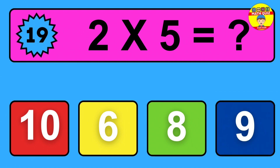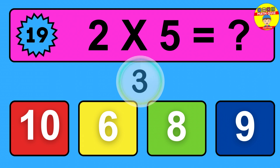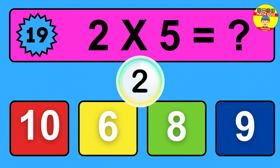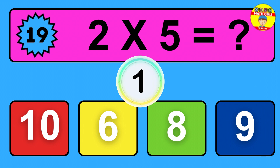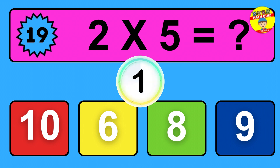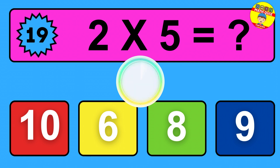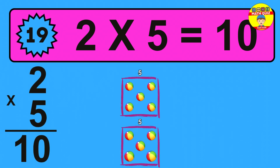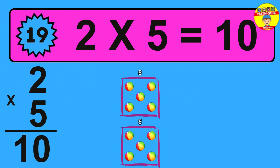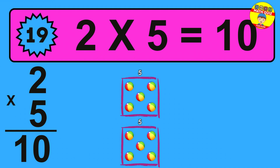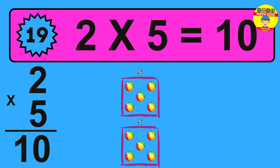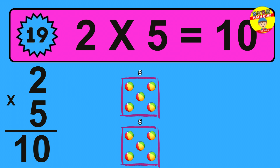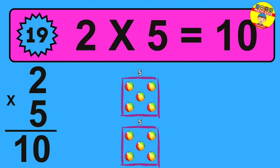Question 19: 2 times 5 equals what? The answer is 2 times 5 is 10. To calculate, we have 2 groups with 5 balls each one. So how many balls do we have? 10 balls.